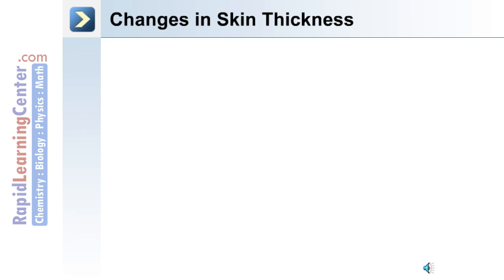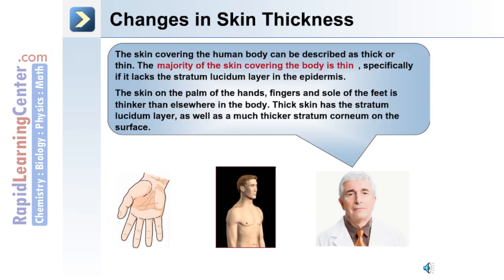The skin can change in thickness in different regions of the body. The skin covering the body can be described as either thick or thin. The majority of the skin covering the body is thin, meaning it lacks the stratum lucidum layer within the epidermis. The skin on the palms of the hands, the fingers, and the sole of the feet is thicker than elsewhere in the body. Thick skin has the stratum lucidum layer as well as a much thicker stratum corneum on the surface.